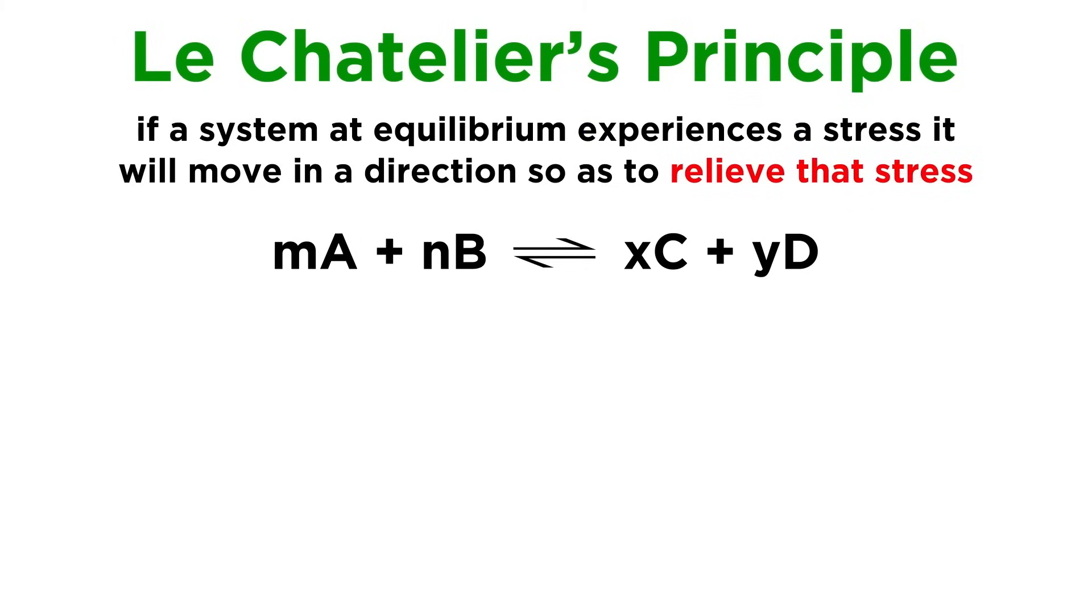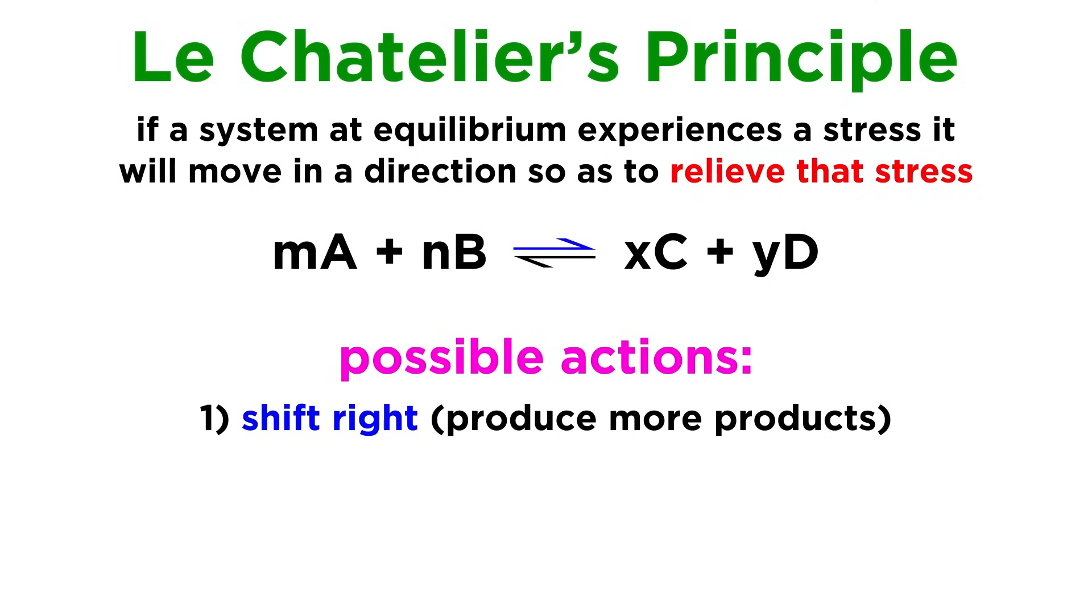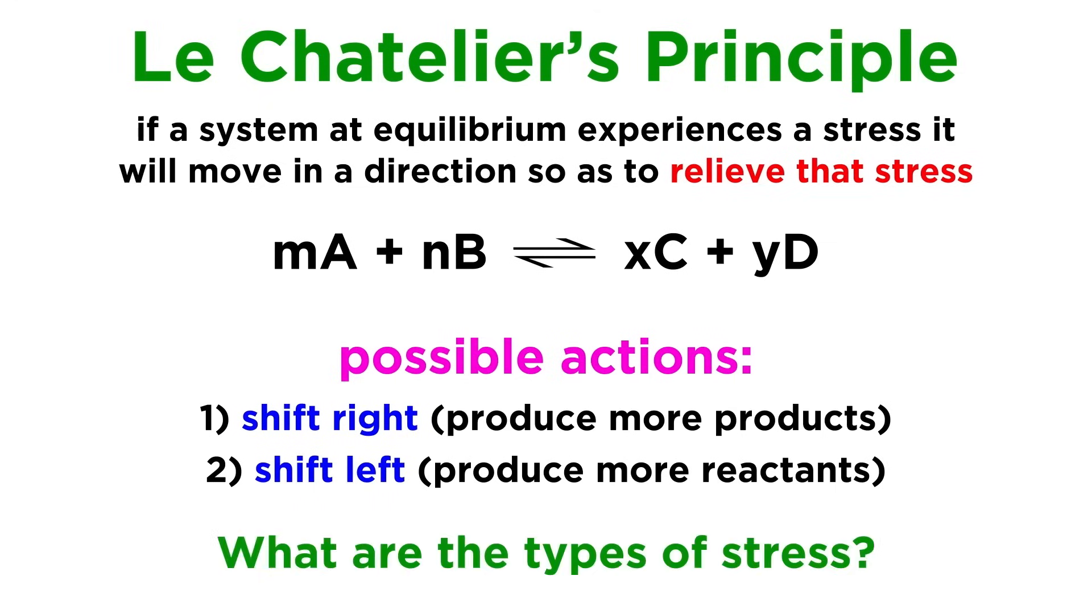Le Chatelier's principle says that if a system at equilibrium experiences a stress, it will move in a direction so as to relieve that stress and return to equilibrium, re-establishing a q equals k relationship. It can only do one of two things as the result of experiencing a stress. It can either shift right, producing more products, or it can shift left, producing more reactants, and we need to be able to predict the direction the equilibrium will move in depending on the type of stress that the system is experiencing. Let's examine the types of stress that a system can experience.